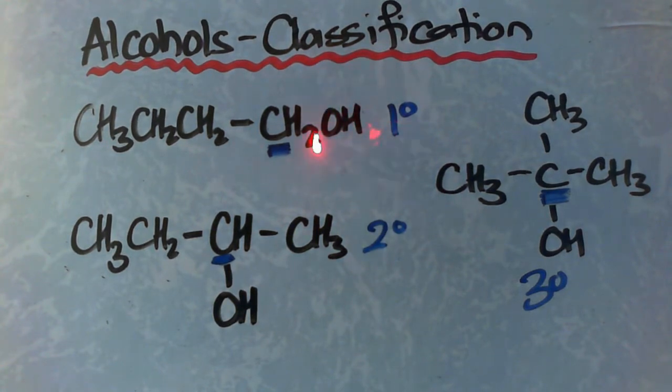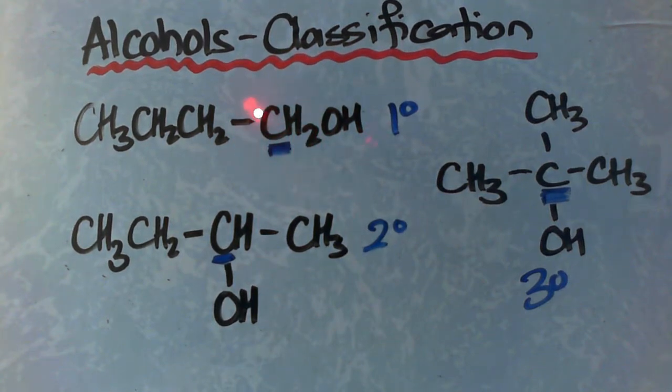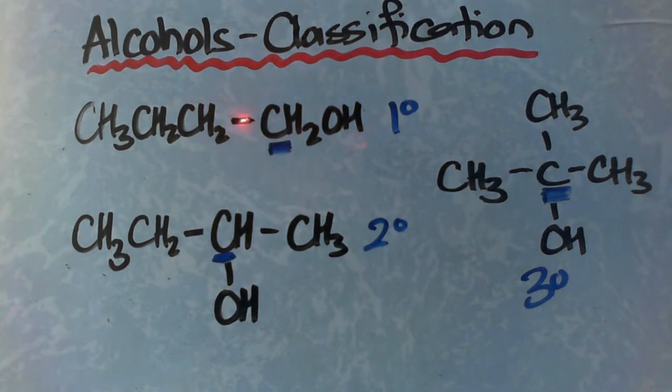The OH group is on one of the terminal end carbons, so it's called 1-butanol. Because the carbon that the OH group is bound to is only bound to one other carbon, we classify this as a primary alcohol.